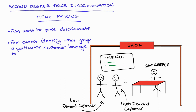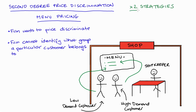The goal when creating this menu of options is to get the high demand customer to choose the option designed for them — this menu option will take advantage of that high demand so the customer will end up spending more overall — and the low demand customer will choose the option designed for them. That option will not be as expensive, so they'll spend less than the high demand consumer, but they'll still engage in the market in a way that brings the firm profit. There are two broad strategies in the literature on how a firm might construct their menu.